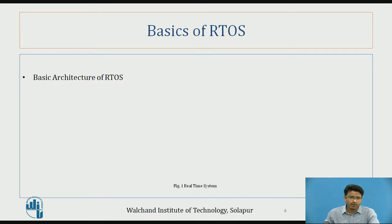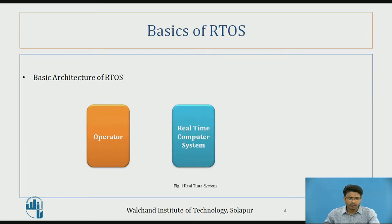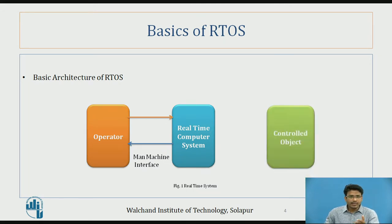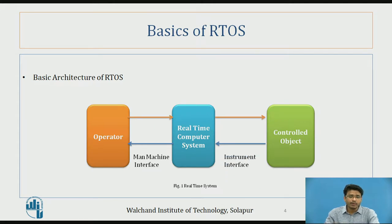The basic architecture of RTOS. In this architecture, we have one operator and the real-time computer system — the operator interacts with the real-time computer system, which is the man-machine interface. In the electric geyser example, the user comes into the bathroom and switches on the geyser — that is the operator and real-time computer system's man-machine interface. After that, the real-time computer system interacts with the controlled object. Controlled objects are the instrument interface, like the thermostat sensor. This is how real-time operating systems work.